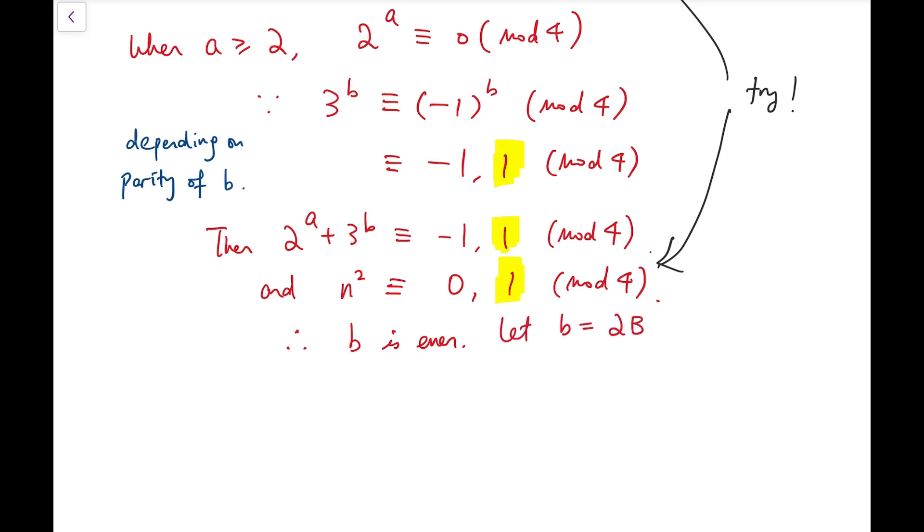So, consequently, we can let b to be a multiple of 2 of another number. I call it big B.